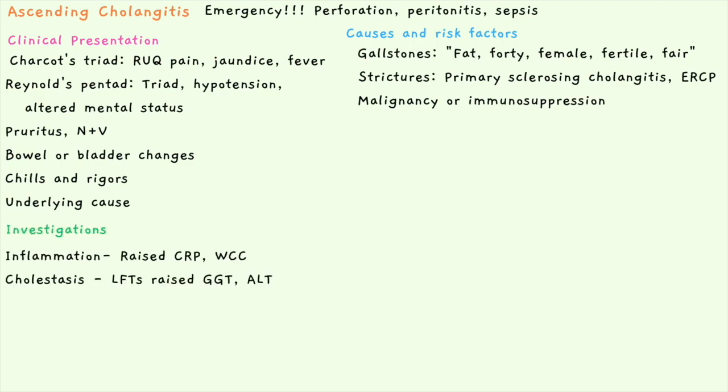Investigations: inflammatory markers are elevated, so raised CRP, raised ESR, and leukocytosis. You'll also have an obstructive or cholestatic picture on liver function tests, with raised GGT and ALP, which are obstructive signs, as well as raised transaminases including ALT and AST.